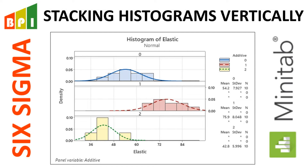One of the views in Minitab I really like is having histograms of the data and then separating them out, sort of like what it does for a dot plot, having them stacked on top of each other so I can see where their distributions line up and using the same x-axis the entire way.